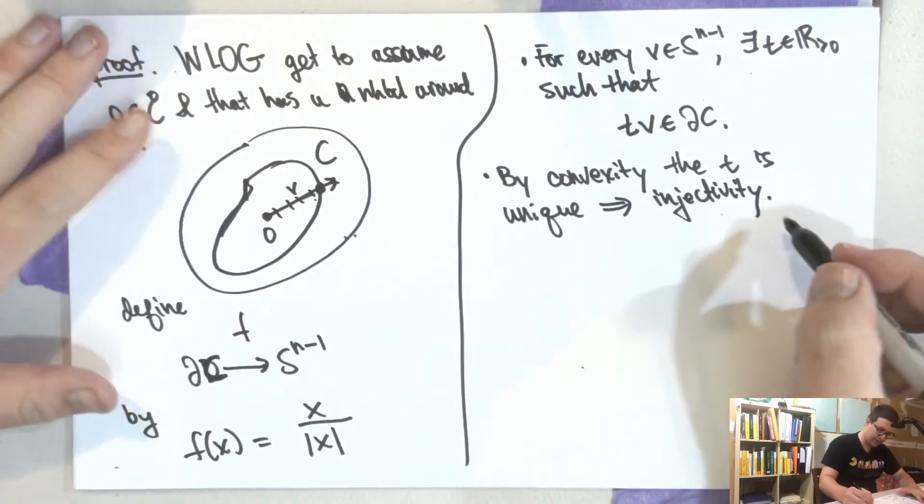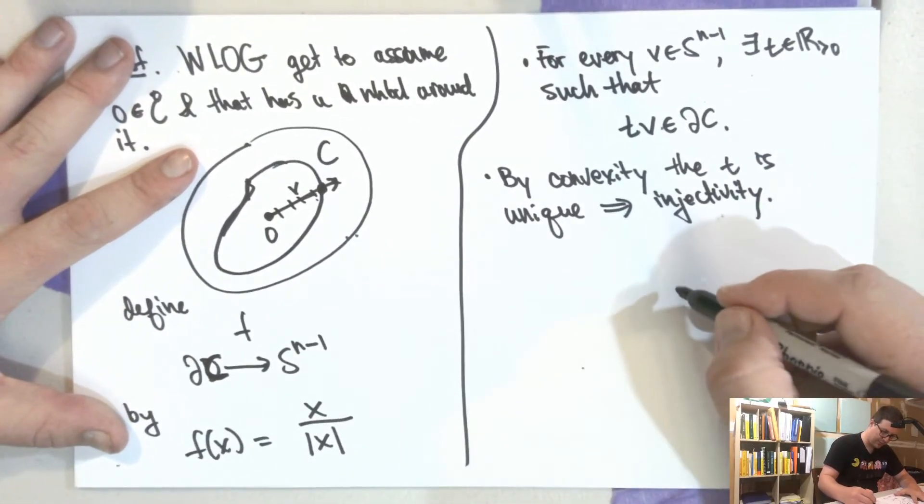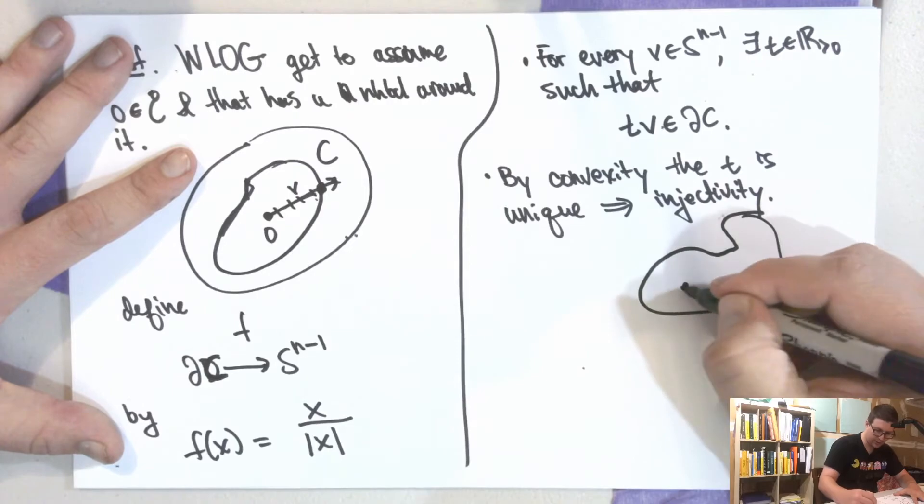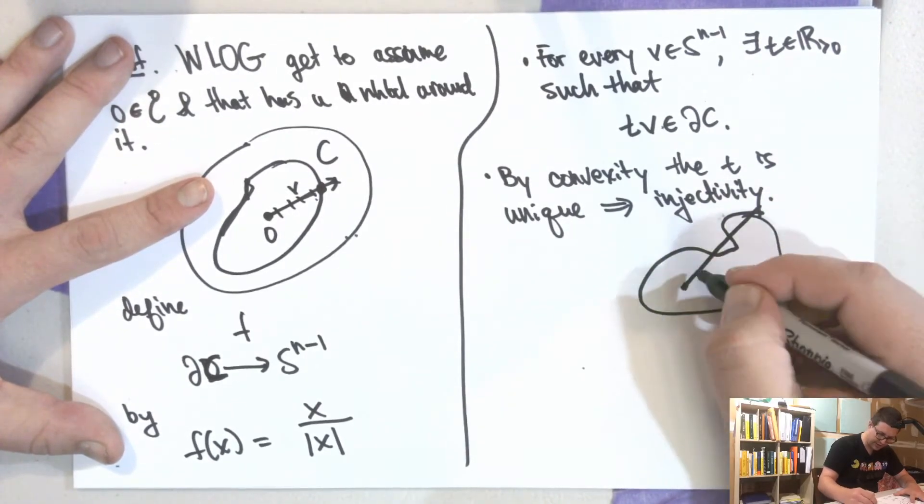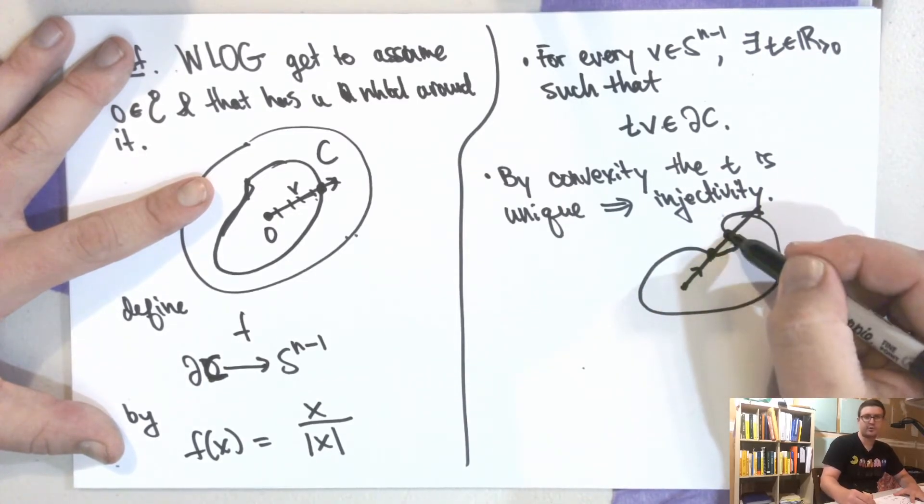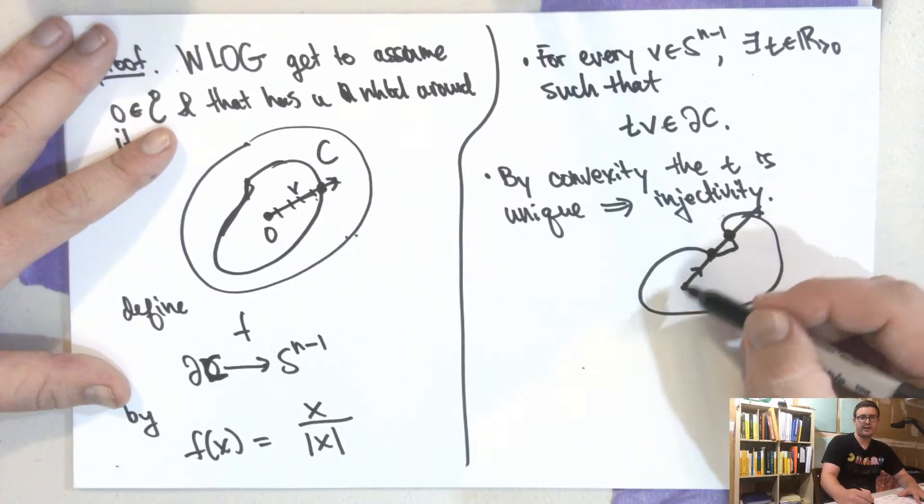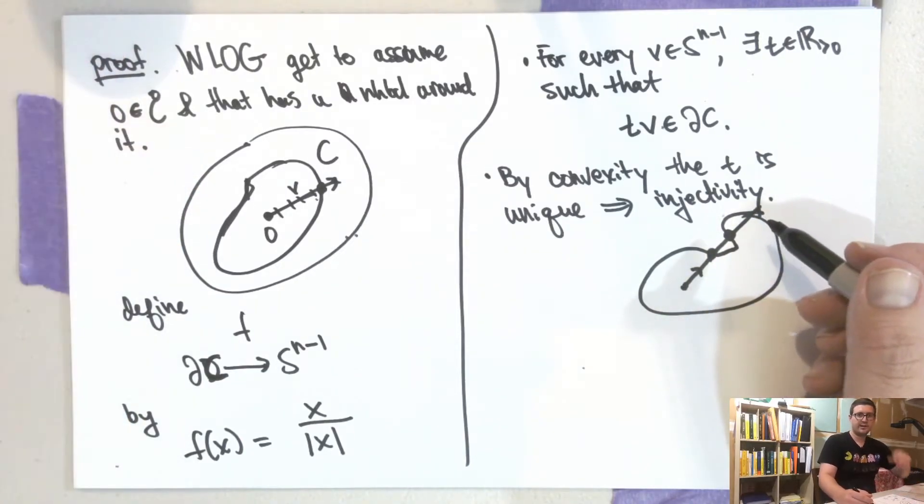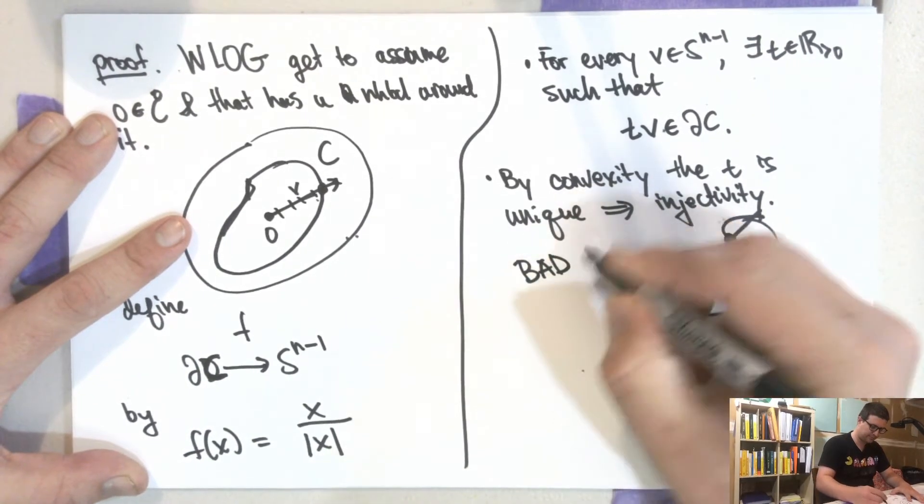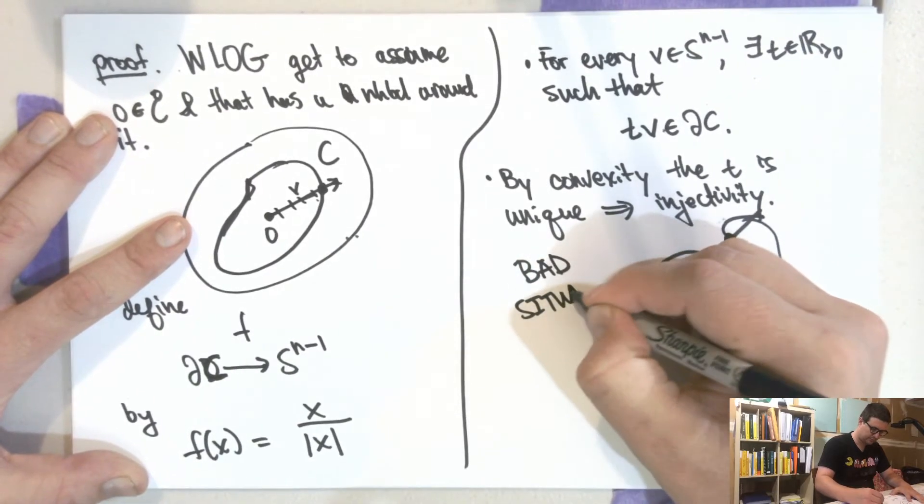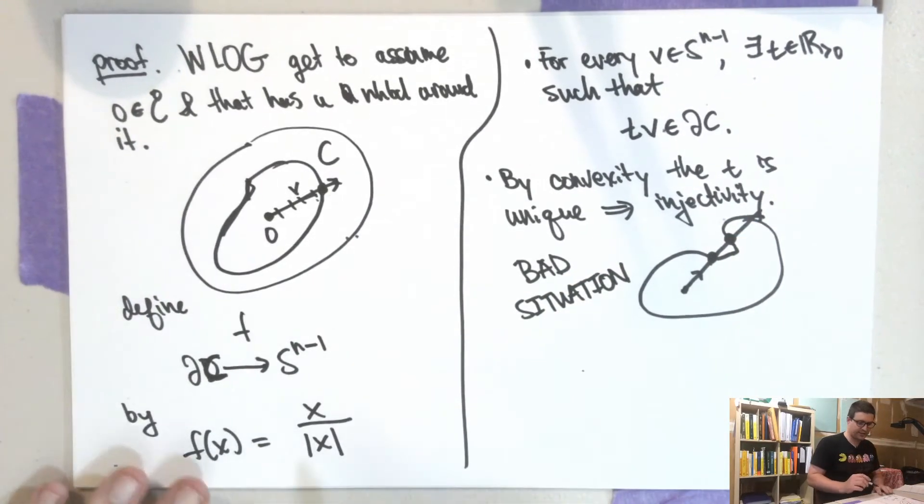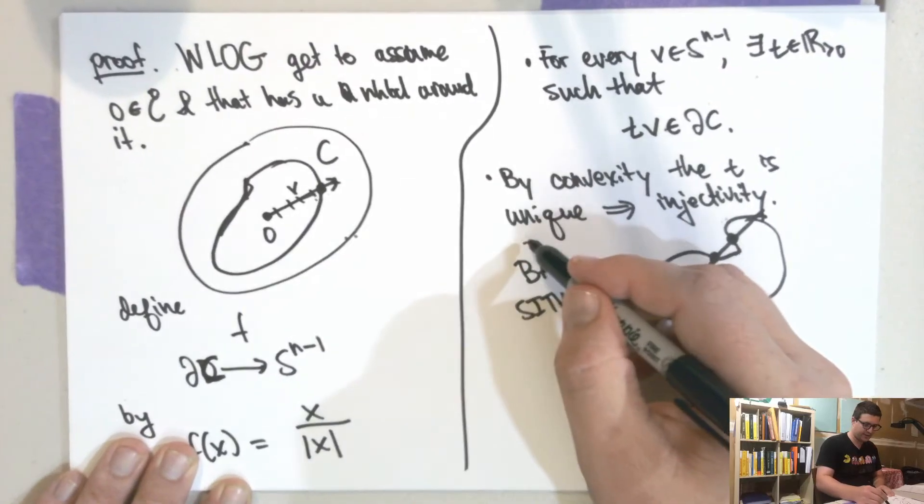And so this implies injectivity. So let me kind of draw the picture again. If we were in some situation like this, where it wasn't unique, so we went around this thing here and as we increase time, there was some boundary point and then another boundary point. Then these two things wouldn't be connected by a straight line. And that would be not good. So this is the bad picture. So this is the bad situation here.